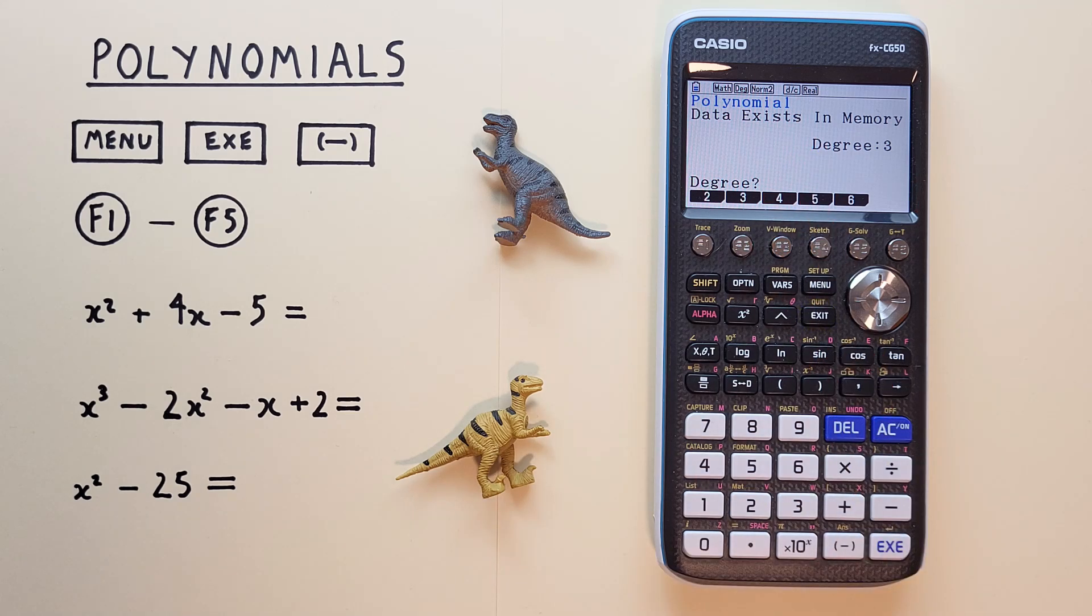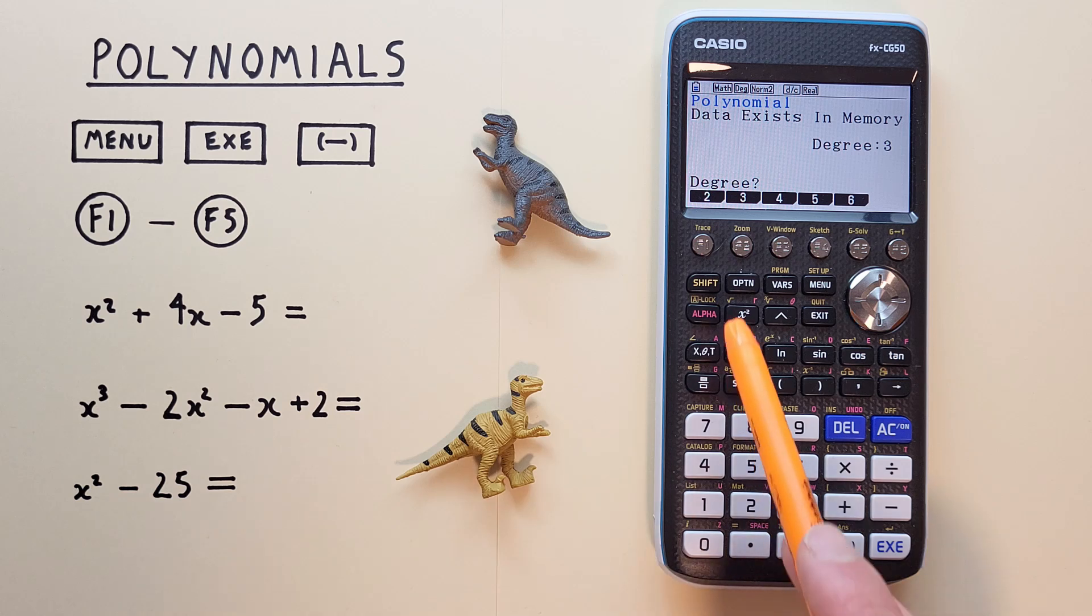And for a new example, let's look at this: x squared minus 25. Well, our degree is 2, because that's our largest exponent. So we hit f1.